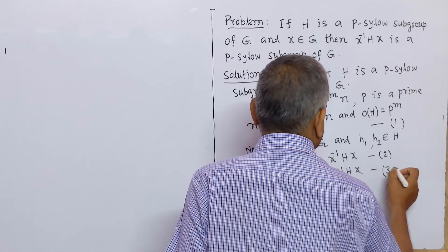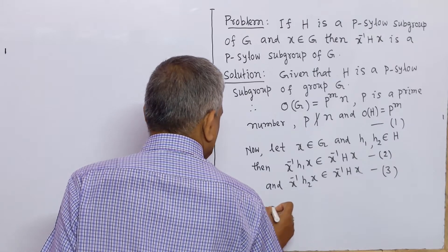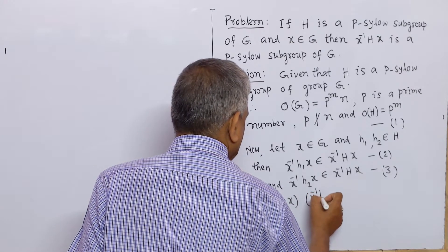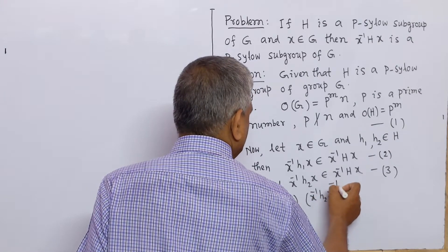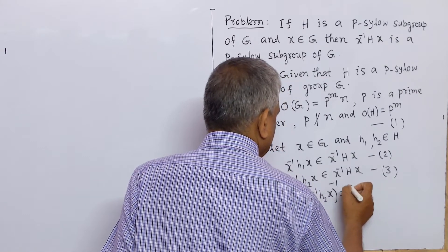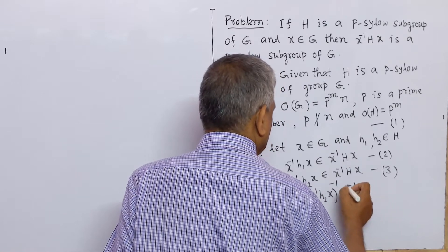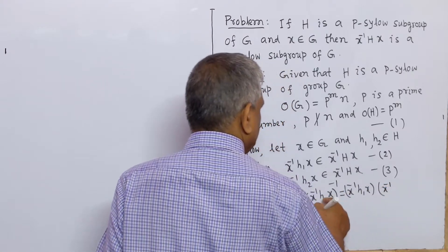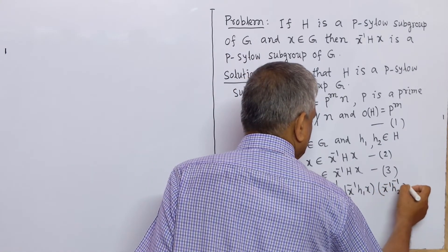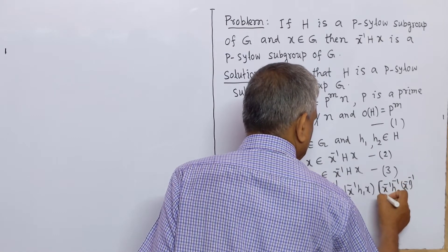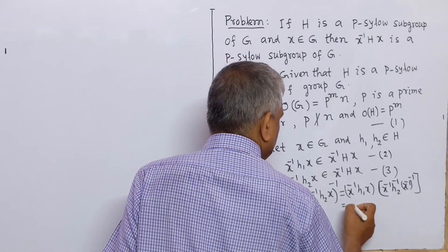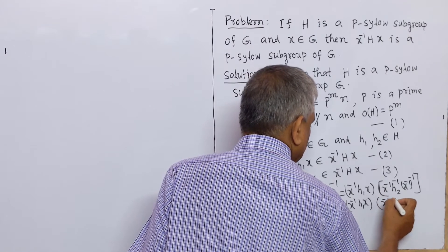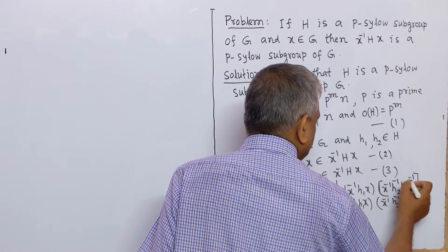Now we compute x inverse H1 x times (x inverse H2 x) whole inverse. Taking the inverse, we get x inverse H1 x times x inverse H2 inverse times (x inverse) whole inverse, which equals x inverse H1 x times x inverse H2 inverse x.